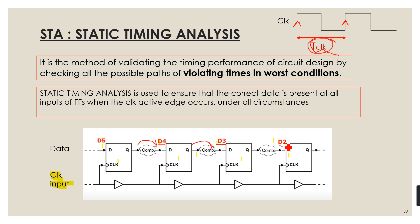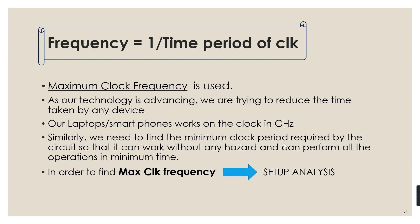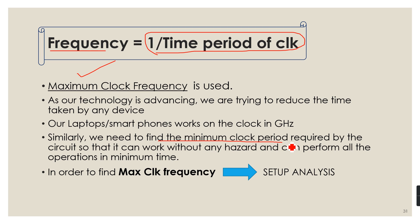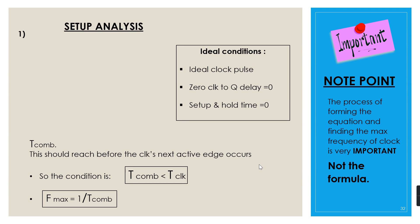Frequency is the reciprocal of the clock period. We consider the maximum clock frequency, which is the maximum frequency at which a circuit can operate without any glitches or violations. As technology advances, we try to minimize the time taken by a device to perform its operations, so we need to find the minimum clock period required for the circuit to work properly. To find the maximum clock frequency, we perform setup analysis.